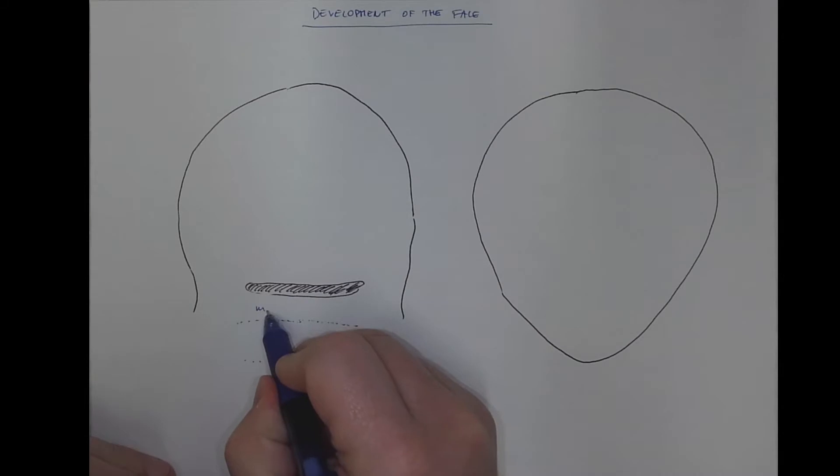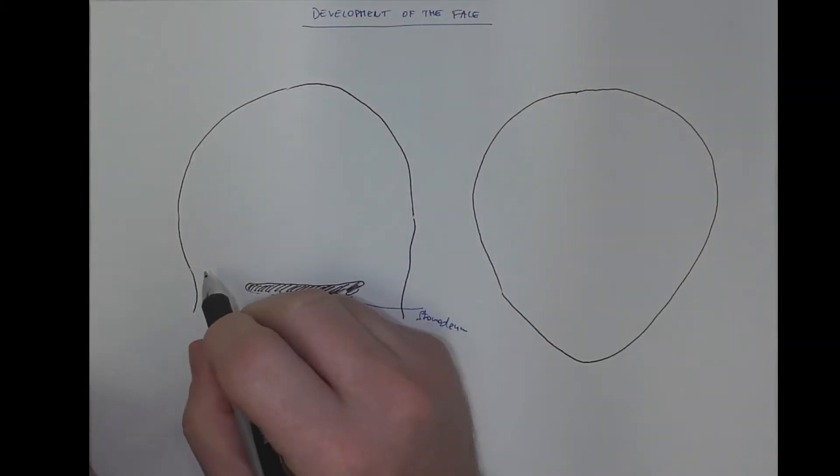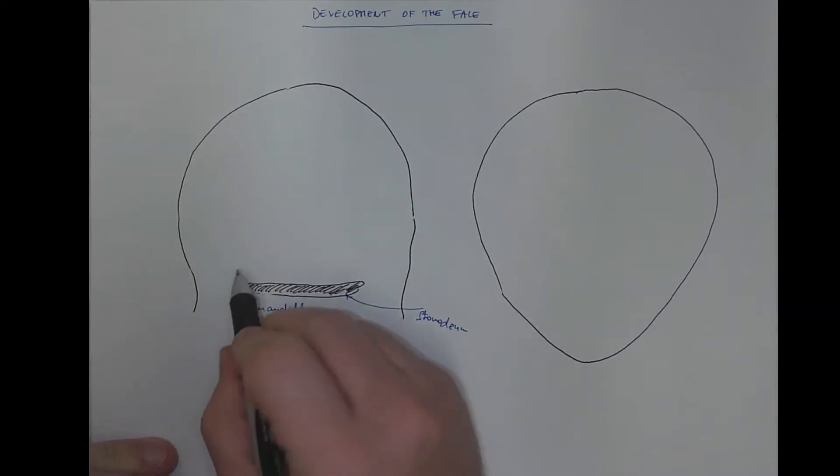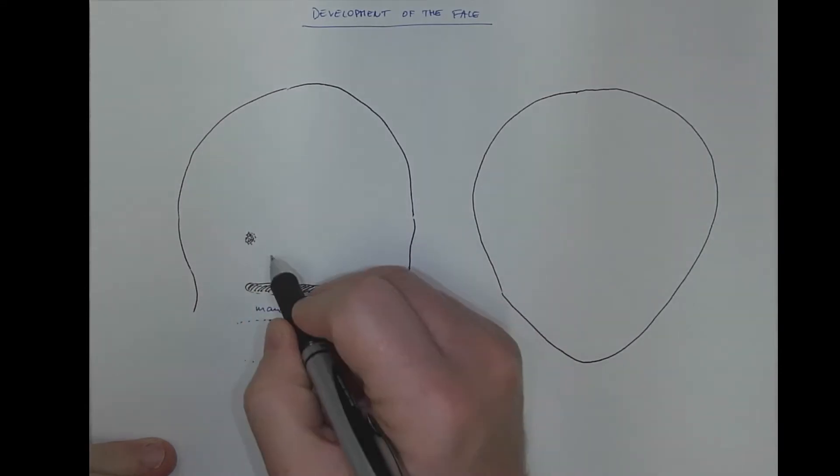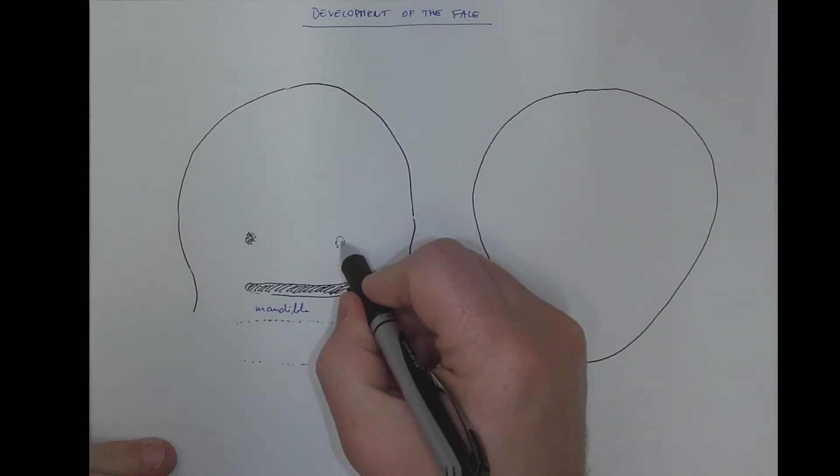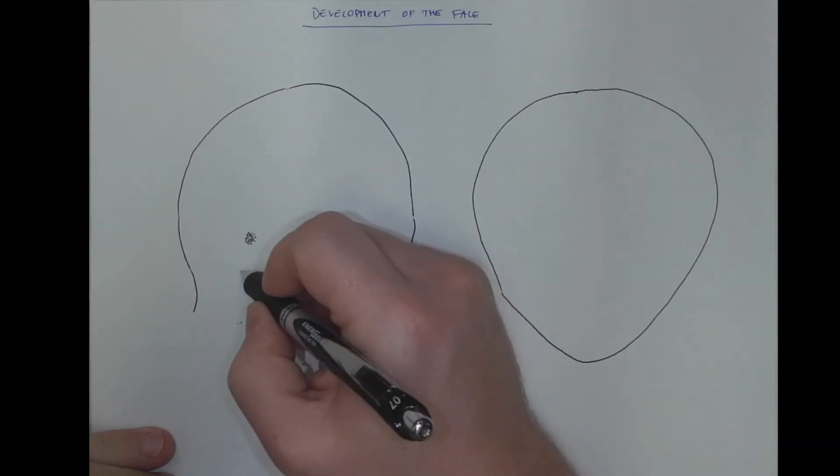Here would be the mandible, the stomodium, and the nasal pits, the invaginating nasal pits. That's where the olfactory placod invaginates and forms deeply into the nasal pit. And the nasal pits are surrounded by some accumulation of material called nasal prominence.